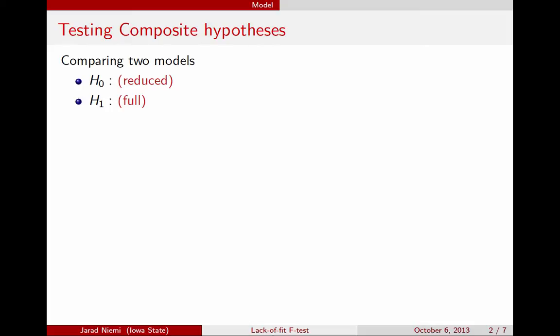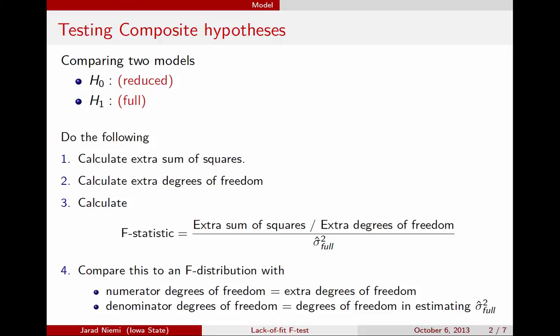Previously we've discussed a general F-test for comparing two models, a reduced model versus a full model. In this construction of the general F-test, we did the following procedure. We looked at the error sums of squares for these two models and took the difference there, and that was called the extra sum of squares.